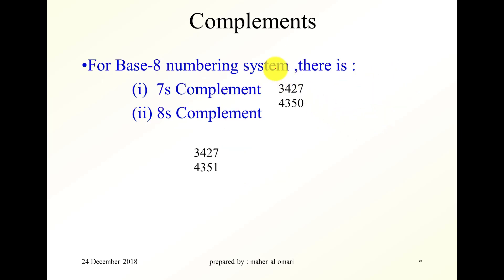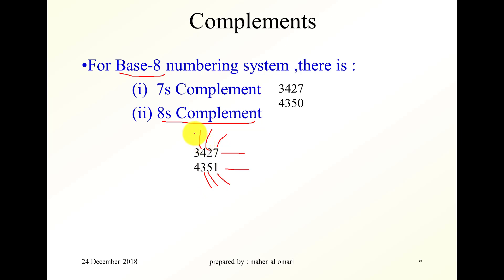For the base 8 numbering system, there is something called the 8's complement. If this is a base 8 number, then the 8's complement for this number is this. How do you find it? 8 minus 7 is 1. 7 minus 2 is 5. 7 minus 4 is 3. 7 minus 3 is 4. So this is the 8's complement for this number. There is also something called the 7's complement. 7 minus 7 is 0. 7 minus 2 is 5. 7 minus 4 is 3. 7 minus 3 is 4.